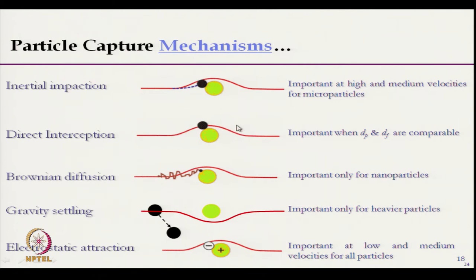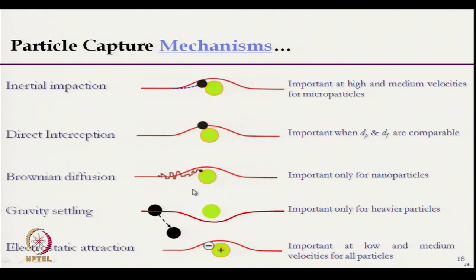In direct interception, particles with lower size and lower inertia can follow the air path and get trapped inside the structure where the particle diameter is higher than the diameter of the pores. In Brownian diffusion, due to Brownian motion, particles strike the fiber surface and settle. In gravity settling, the mass of the particle causes it to separate from the air stream. Electrostatic attraction occurs due to different charges.